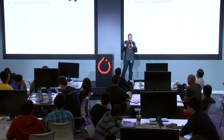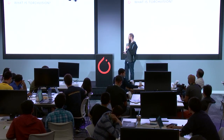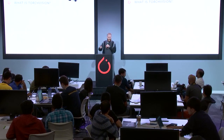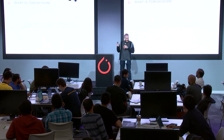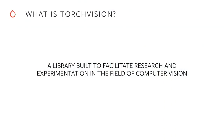The first thing you might ask yourself is: what is TorchVision? Given the other talks you have seen, it might be something about computer vision and PyTorch — and that's actually right. TorchVision is a library that is built to help you experiment with computer vision in PyTorch, and there are a number of tools in there that are going to make your life easier for that task.